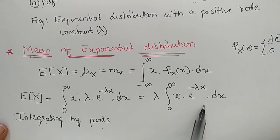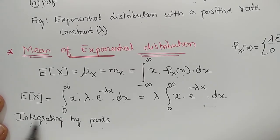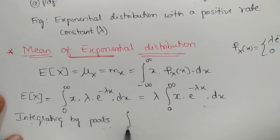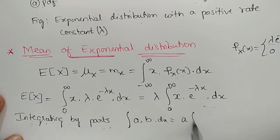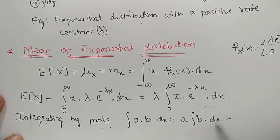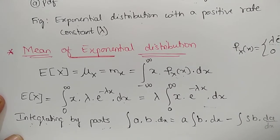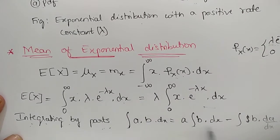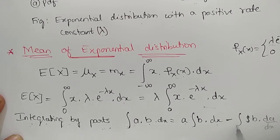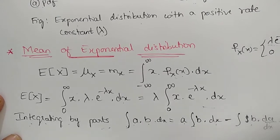We integrate by parts using the formula: ∫a·b dx = a·∫b dx − ∫(∫b dx)·(da/dx) dx. First write a as it is, take the integral of b with respect to x, then subtract the integral of that result multiplied by the derivative of a.